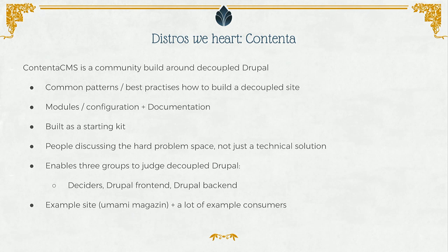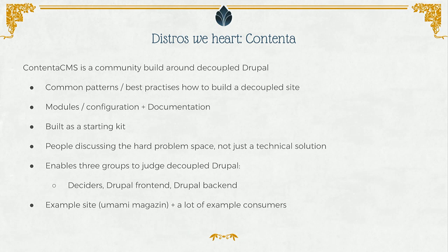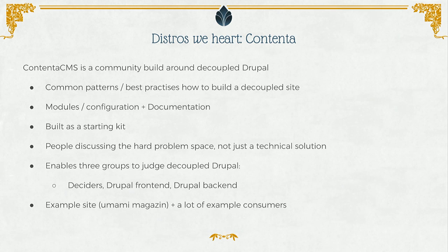I kind of look at Lightning as core-plus-plus. It's not opinionated about styling — it ships with Bartik and Seven out of the box — and its purpose is to improve life for authors. The final distribution we want to show is Contenta, which is the API-first distribution. Instead of using Panels and all these things to build your site, you have an API and a consumer which pulls data in and renders stuff. It's a full distribution to get you started — the main difference is that Contenta is really just a starter kit, while Thunder and Lightning provide a continuous update path.